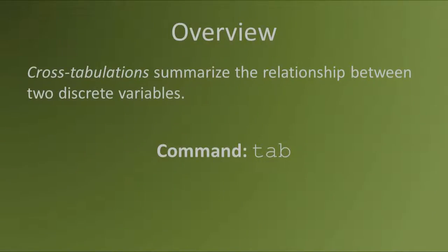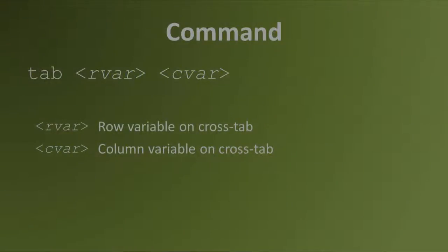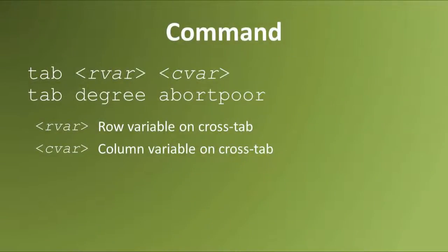To create cross-tabulations, we use the command tab, short for tabulate. The syntax is: tab, space, the name of the variable you want as rows, space, the name of the variable you want in columns. For example, to create the earlier table comparing educational attainment and abortion attitudes, we type tab space degree to make degrees the rows, and space abort_poor to make attitudes towards abortion for reasons of poverty the columns.